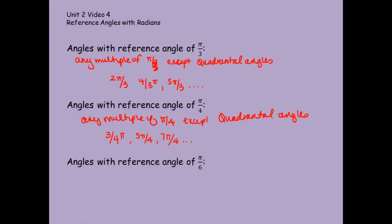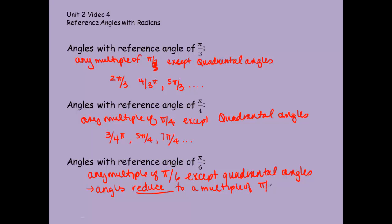Angles with a reference angle of π over 6. These would be any multiple of π over 6 except our quadrantals, and except quadrantal angles or angles that reduce to a multiple of π over 3, because then it would have a reference angle of π over 3. Let me give some examples here.